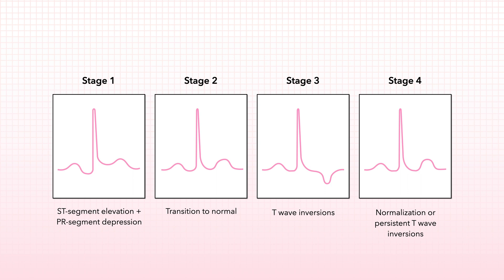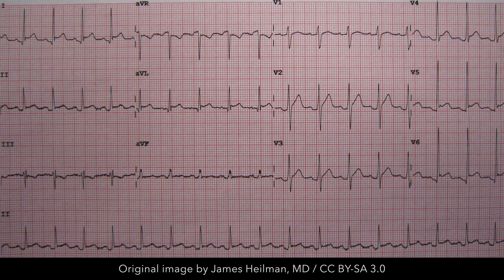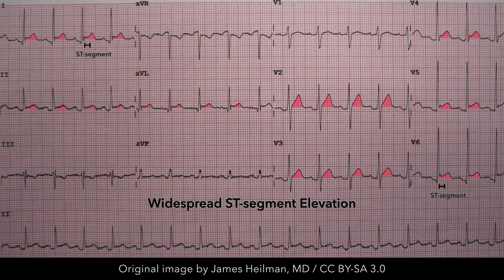Now let's take a closer look at the classic findings that may be present during the acute phase. Here is a rather characteristic ECG. The most common finding of acute pericarditis is widespread elevation of the ST segment above the isoelectric line. Unlike with myocardial infarction, the ST segment is typically concave upward. While ST segment elevation occurs in most limb and precordial leads, it is usually normal or depressed in leads AVR and V1.